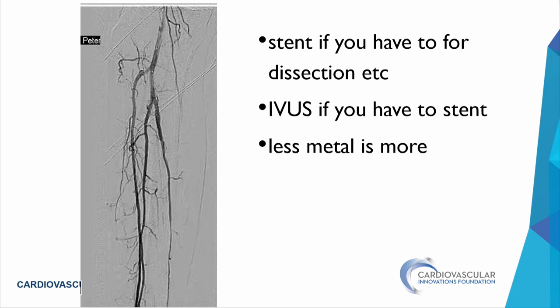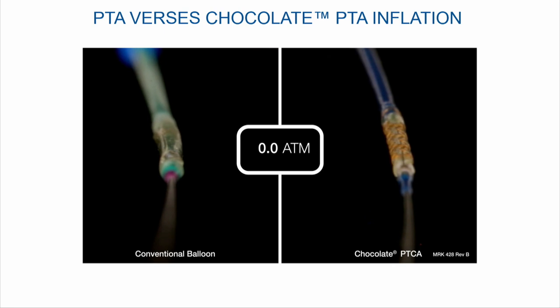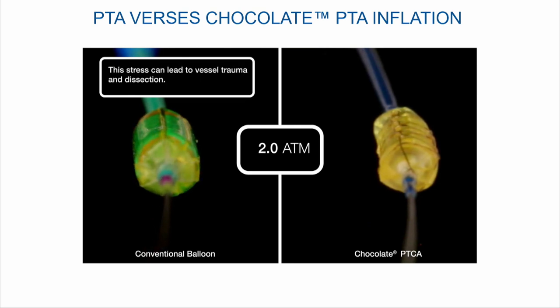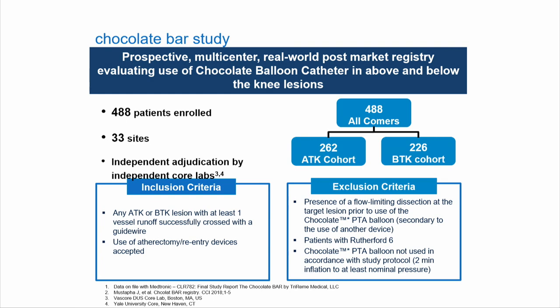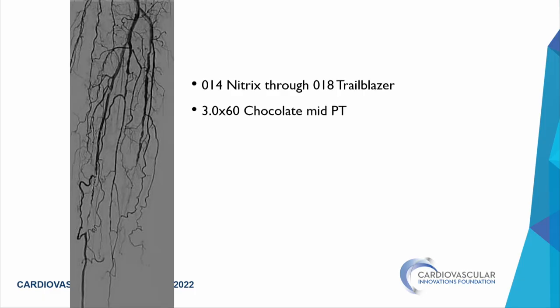Chocolate balloons are constrained within a nitinol cage that limits torsional dissection forces during inflation. Little pillows expand through the cage openings to limit dissection. The CHOCOLATE BAR registry — 260 below-knee and 260 above-knee patients — showed 99% freedom from bail-out stenting and 100% freedom from flow-limiting dissection. It is ultimately a balloon, but technology within balloon angioplasty can yield dissection-free results.